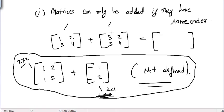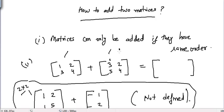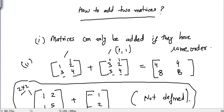For example, I will add this one with this three — this one is present at position one-one, and here three is also present at position one-one, that is first row first column. So I add one with three and get four. Similarly, this two is added to this two, this three is added to this five to get eight, and this four is added to this four to get eight. So this is the result of the addition of these two matrices.